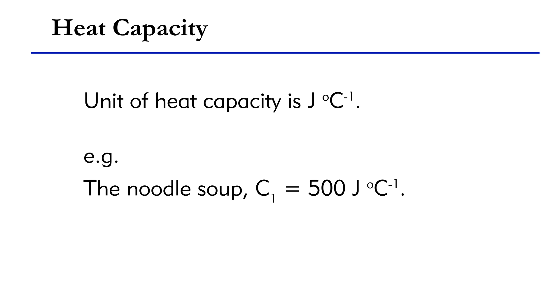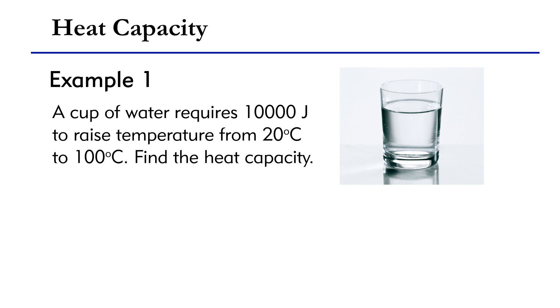For example, the heat capacity of the noodle soup above is 500 Joules per degree Celsius and that of the stirred noodle is 50 Joules per degree Celsius. Now, let's look at some examples.